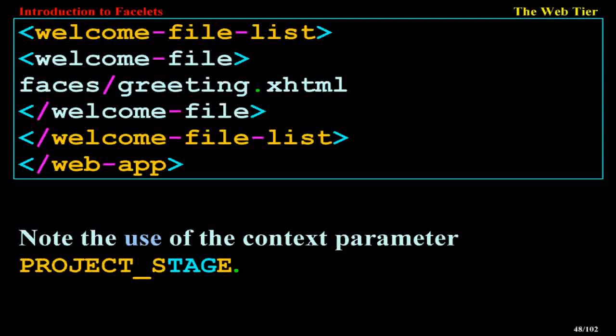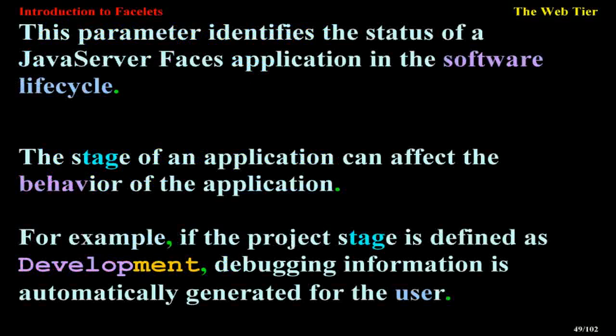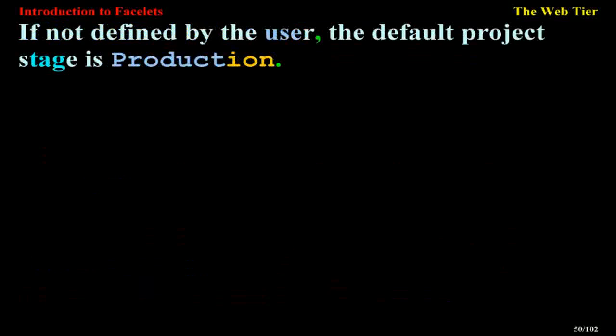Note the use of the context parameter PROJECT_STAGE. This parameter identifies the status of a JavaServer Faces application in the software life cycle. The stage of an application can affect the behavior of the application. For example, if the project stage is defined as development, debugging information is automatically generated for the user. If not defined by the user, the default project stage is production.